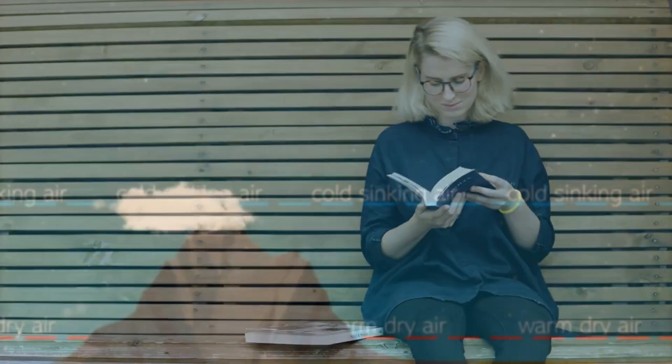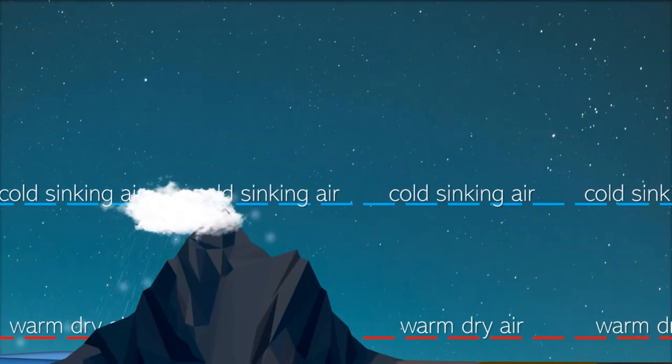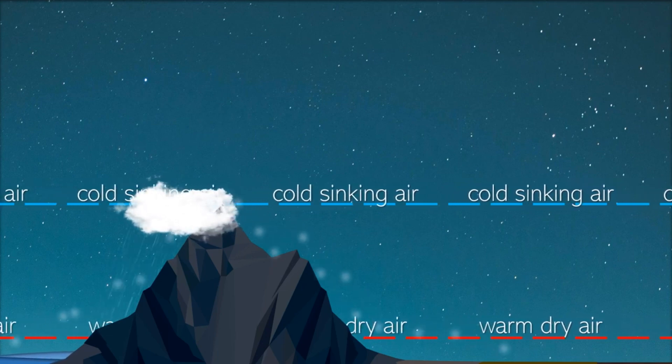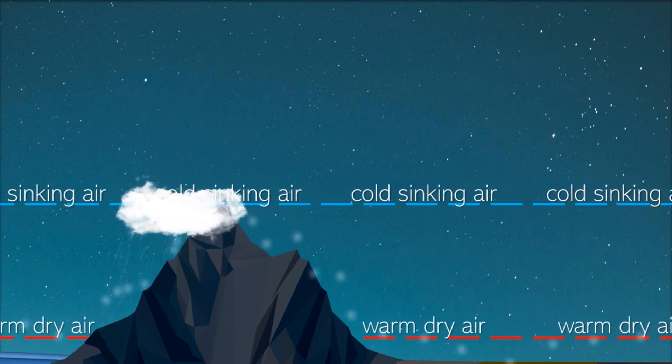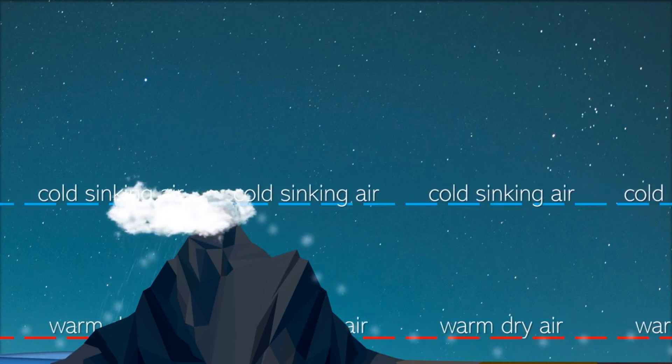But now that we understand all our required background knowledge, we can focus in on Chinook winds. Simply put, as the air descends down the leeward side of the mountain ranges, it warms and becomes dry.